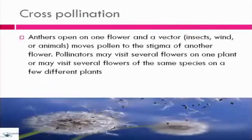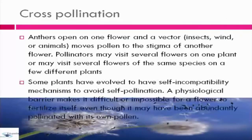When a flower opens, a vector — insects, wind, or animals — moves pollen to the stigma of another flower. Pollinators may visit several flowers on one plant or several flowers of the same species on different plants. Some plants have evolved self-incompatibility mechanisms to avoid self-pollination — a physiological barrier that makes it difficult or impossible for a flower to fertilize itself, even if it has been abundantly pollinated with its own pollen.